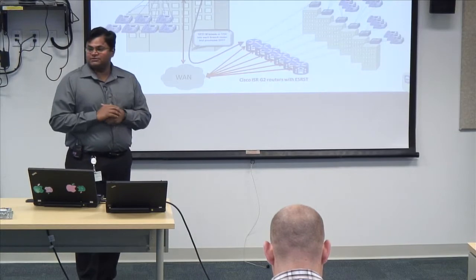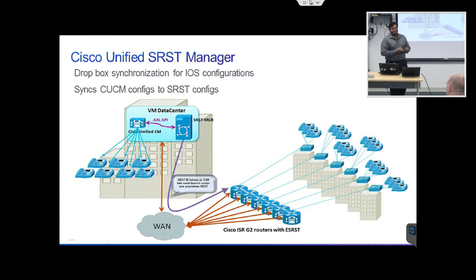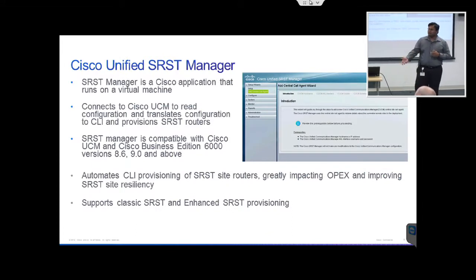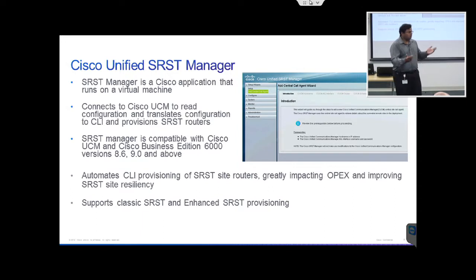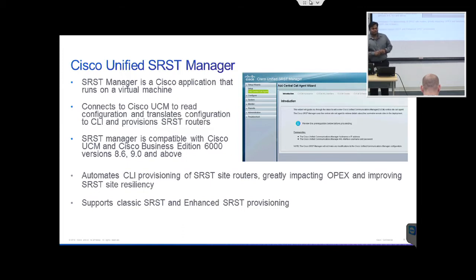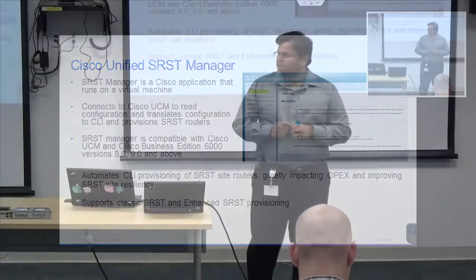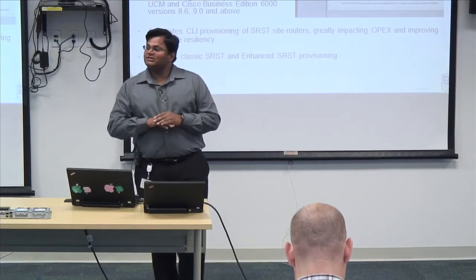That's where the SRST Manager comes in — that's the second thing we did. The SRST Manager is a virtual machine; it's no longer tied to hardware or a blade. Call Manager is virtualized, and so is the SRST Manager — you can install it right on the same UCS server. It logs into Call Manager, identifies all the different sites associated with that Call Manager, all the users associated to those sites, all the extensions for those users — every bit of information it needs. Then it translates all that into CLIs and pushes it down automatically into the routers. So you as an end user need not worry about CLI at all.